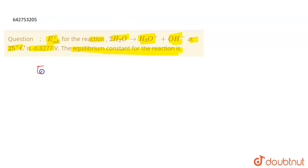So basically, you are given E°cell for the reaction as -0.8277 volts. You have to find out the equilibrium constant. The reaction is 2H2O gives H3O+ plus OH-. This is the reaction that we have.